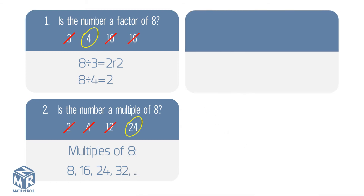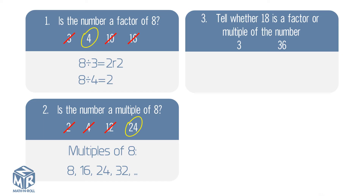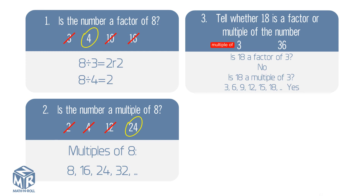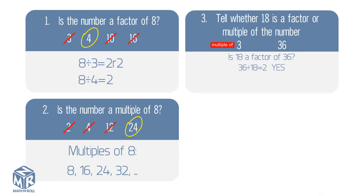Let's try another question. Tell whether 18 is a factor or multiple of the number. Is 18 a factor of 3? No, because all factors of 3 are less than or equal to 3. Is 18 a multiple of 3? Let's list the multiples of 3: 3, 6, 9, 12, 15, 18, and so on. 18 is on the list of multiples, so 18 is a multiple of 3. Is 18 a factor of 36? 36 divided by 18 equals 2 with no remainder, so 18 is a factor of 36.